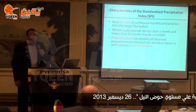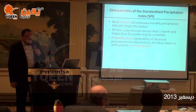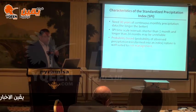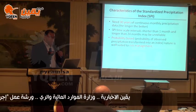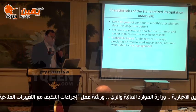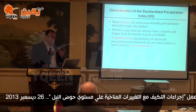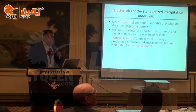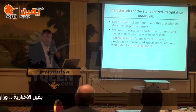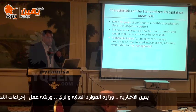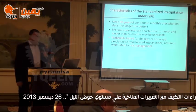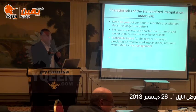To apply the SPI index, you need at least 30 years of rainfall records — though some sources suggest a minimum of six years — and it works at time scale intervals. Time scales shorter than one month or longer than 24 months may be unreliable. SPI is a probability-based index of observed precipitation, and its nature is well-suited to risk management by decision makers.